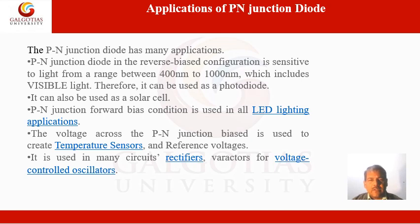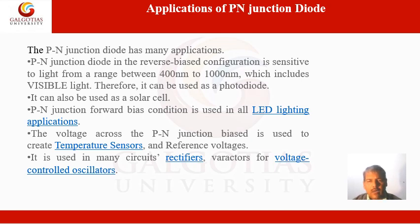Applications of the P-N junction diode: The P-N junction diode has many applications. A P-N junction diode in reverse bias configuration is sensitive to light in a range from 400 nanometers to 1000 nanometers, which includes visible light — therefore it can be used as a photodiode. It can also be used as a solar cell. The P-N junction in forward bias is used in all light-emitting diode (LED) lighting applications. The voltage across the P-N junction diode is used to create temperature sensors and reference voltages. It is also used in circuits such as rectifiers, varistors for voltage control, oscillators, etc.